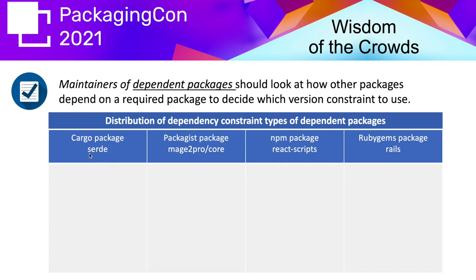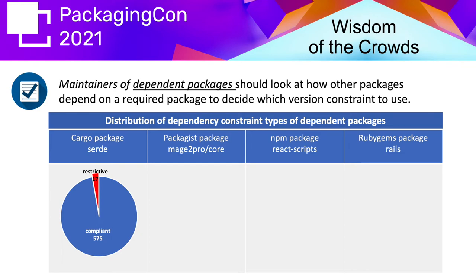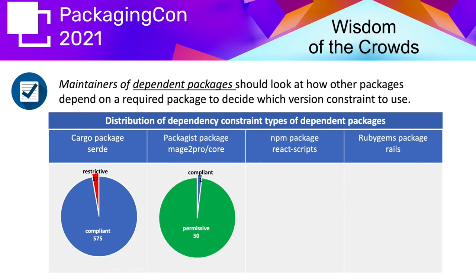For example, take the Cargo package Serde. If you want to depend on it, you can look at what constraints existing dependents use. In this case, 575 dependents use a semantic versioning compliant constraint while only 17 use a more restrictive one, suggesting it's safe to use a compliant constraint. In another example from Packagist, the mage2procar package has 51 dependents and almost all use a permissive constraint, so one could even use a permissive dependency constraint here.